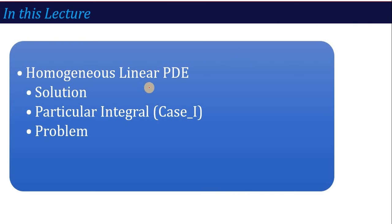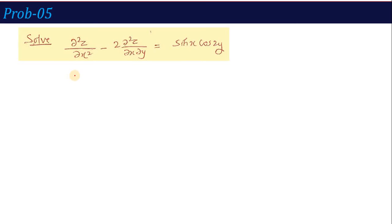In this lecture, I am going to discuss some other types of questions — other cases. The first problem to solve is: del squared z over del x squared minus twice del squared z over del x del y equals sin(x)cos(2y). This is still an AX plus BY form on the right-hand side, as we will see when we calculate the PI.